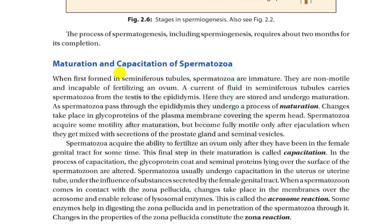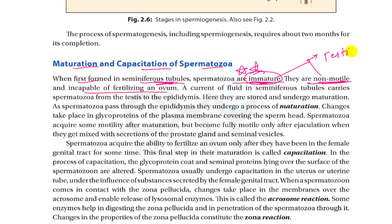There is a process called maturation and capacitation of spermatozoa. When first formed in the seminiferous tubules, spermatozoa are immature, non-motile, and incapable of fertilizing an ovum. Because they are non-motile, they cannot travel from the testes to the fallopian tube on their own. A current of fluid in the seminiferous tubules carries spermatozoa from the testes to the epididymis.